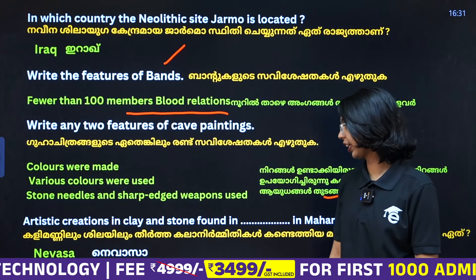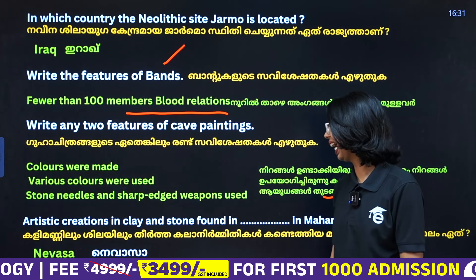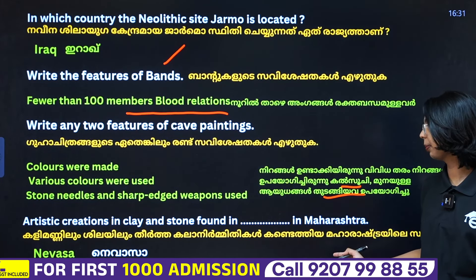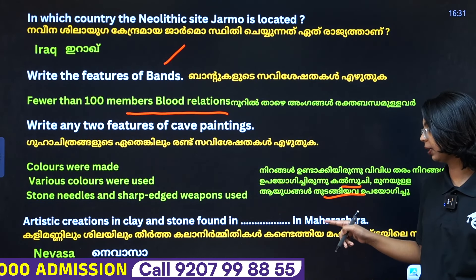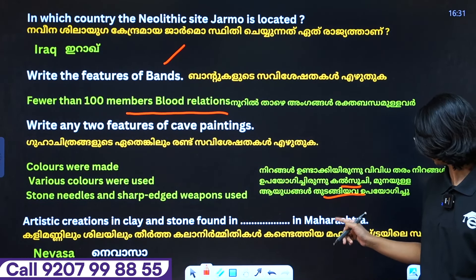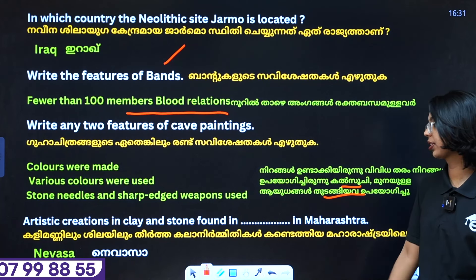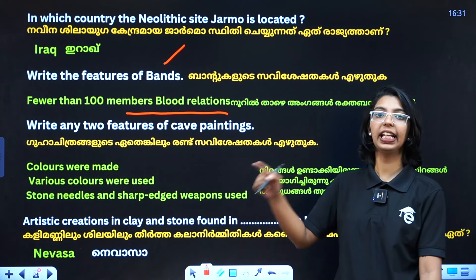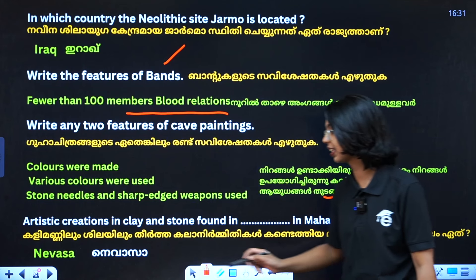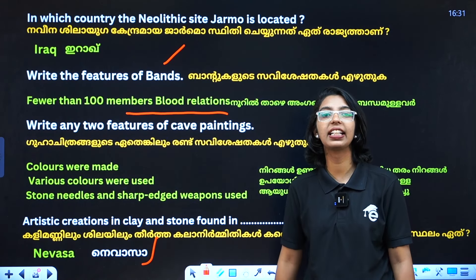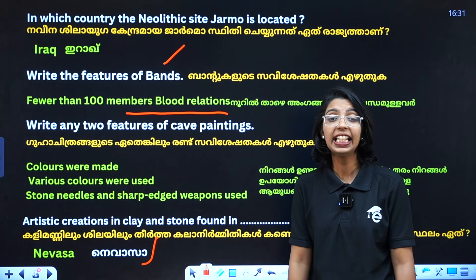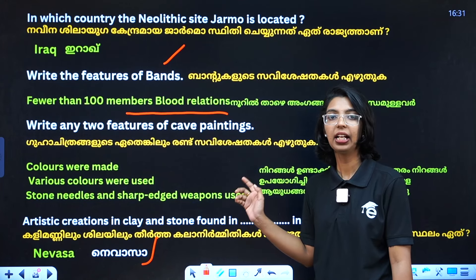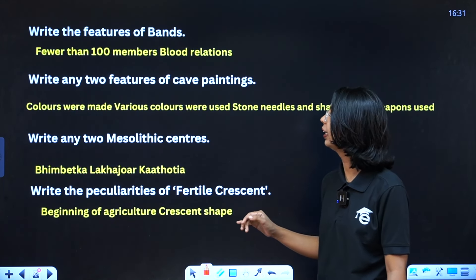Now, artistic creation in clay and stone found in Maharashtra. This includes Kalimandam, Chilayam, Kalanar, and Kandathya in Maharashtra. I am going to show any style found in Maharashtra.